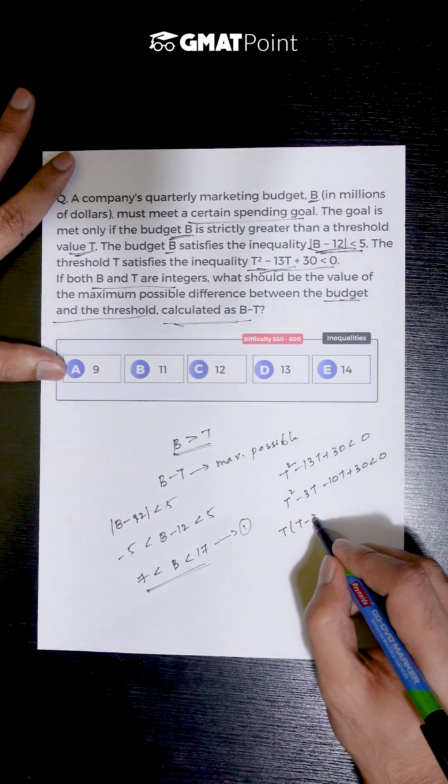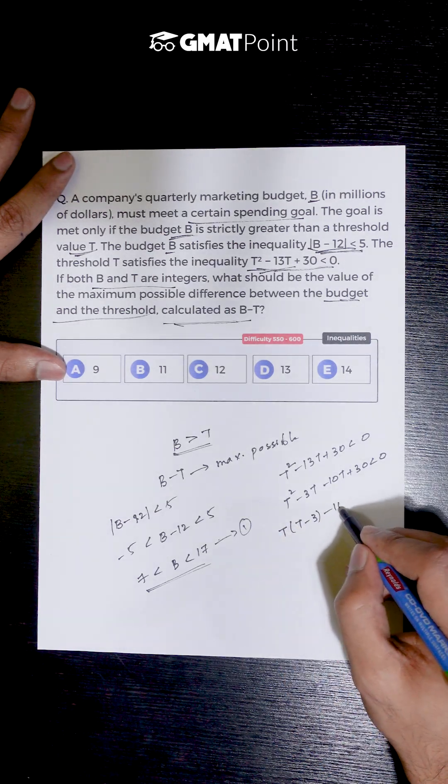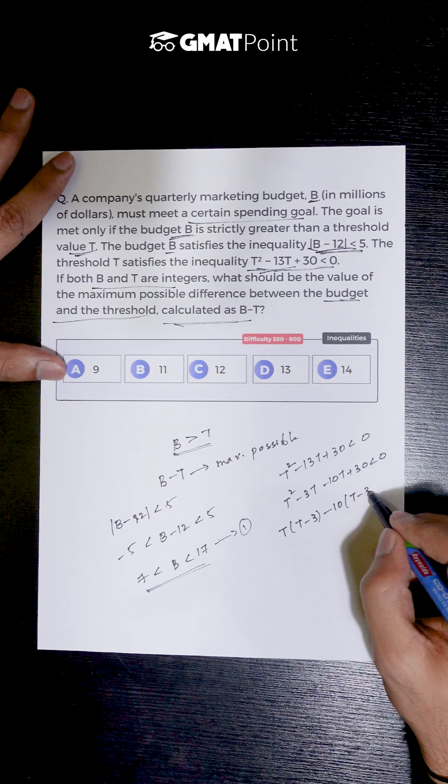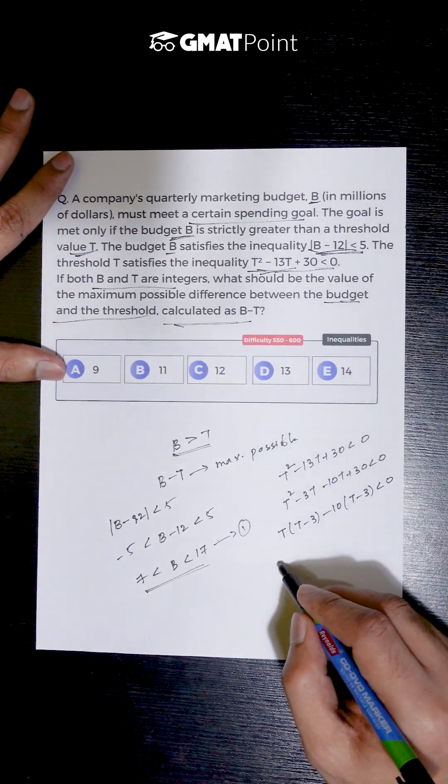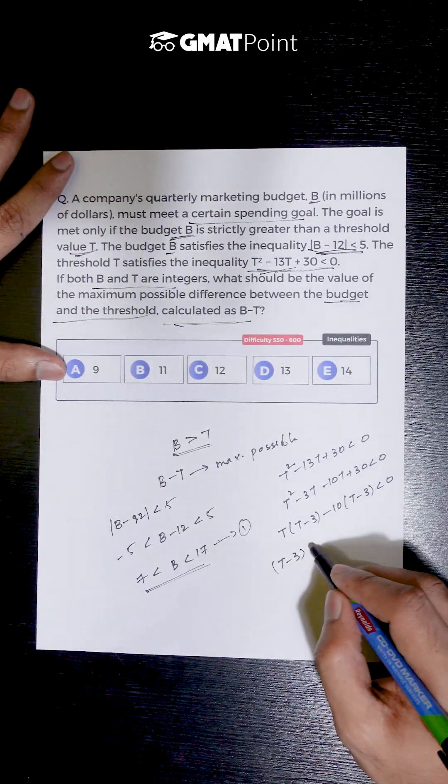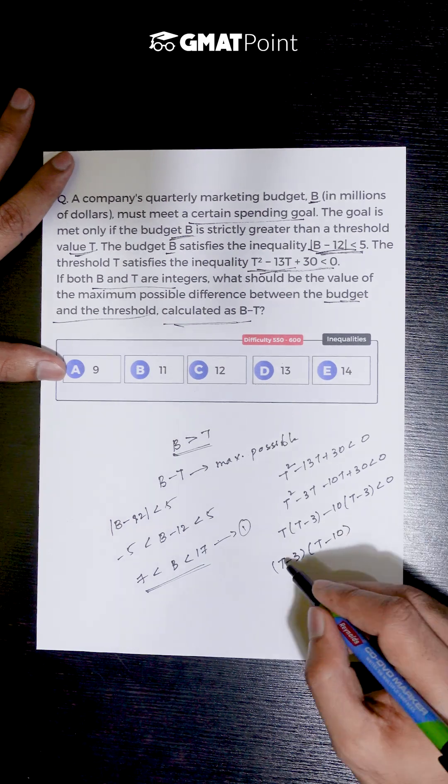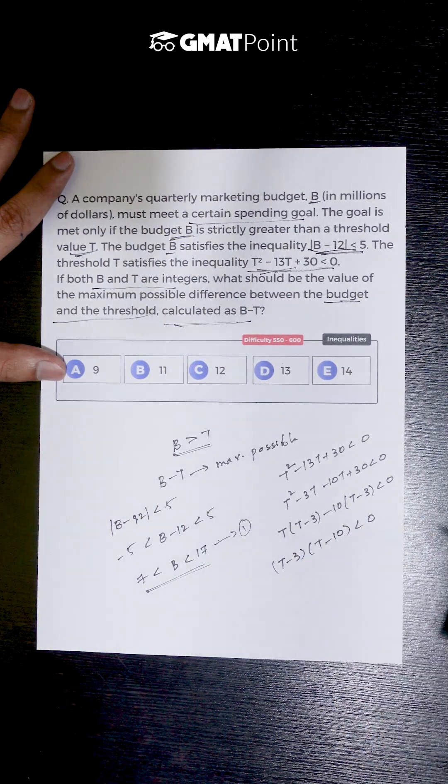Taking T common, we get T(T - 3), and taking -10 common, we get -10(T - 3) < 0. Taking T - 3 common from the whole equation, we have (T - 3)(T - 10) < 0.